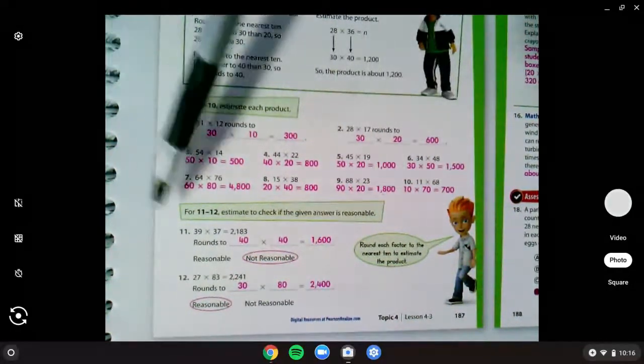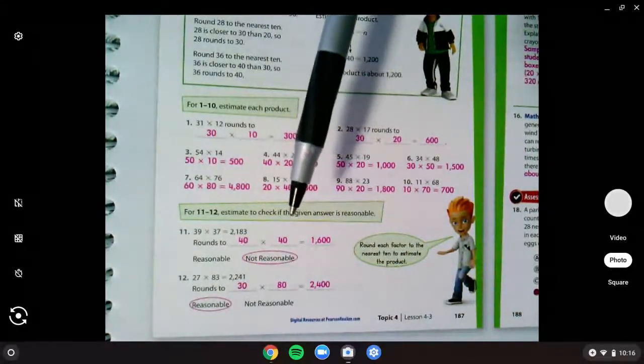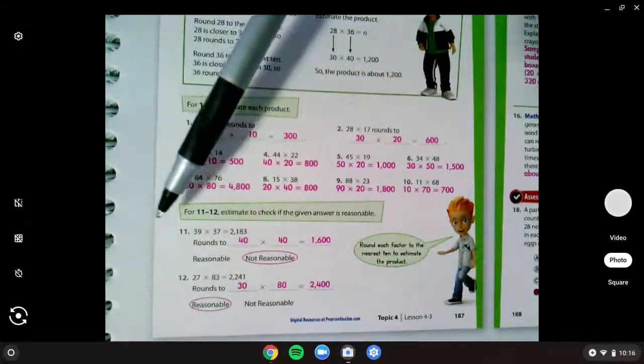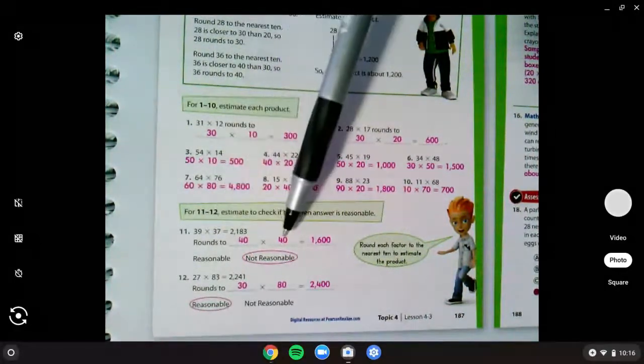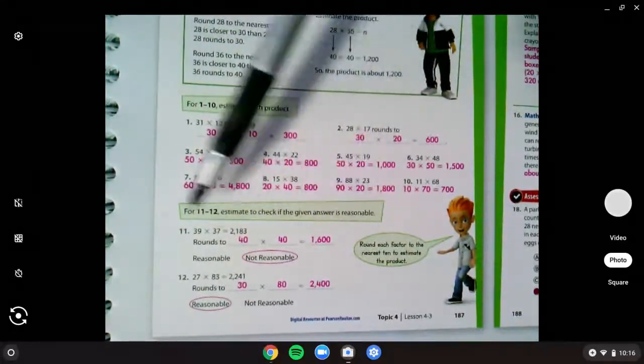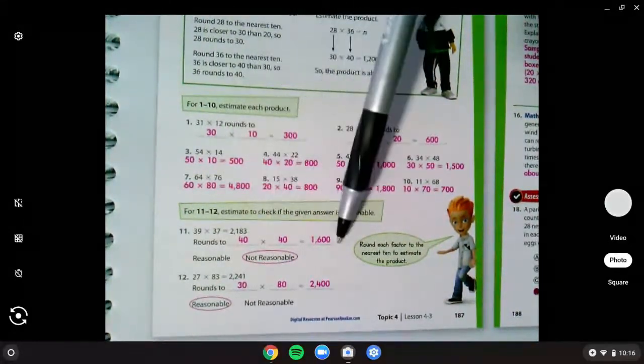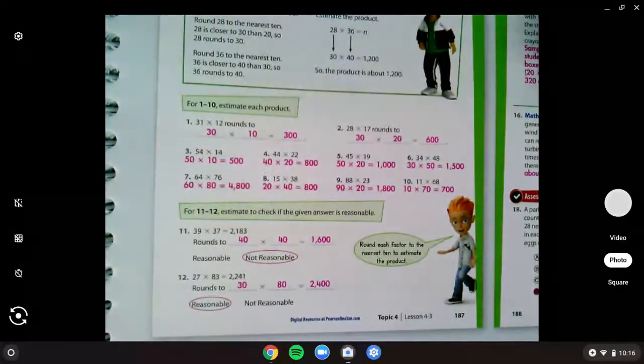On the back, or down below, number 11, you need to figure out if it was reasonable or not reasonable. Well, we've rounded up to 40, multiply, 37 also rounds up to 40, should be 1600. Now, those are not within a few hundred, so this is not reasonable.